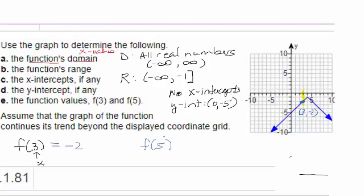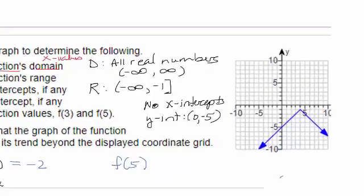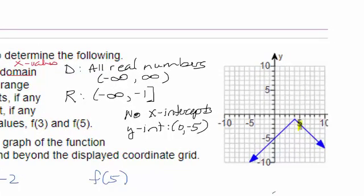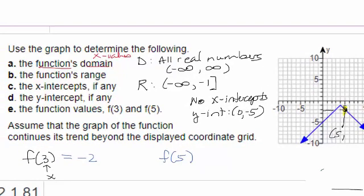And now let's find f of 5. That's another question in part E. I'm going to go over to 5. Go down here. We see that it does hit the graph. And it looks like 5 also has a, when x is 5, the y-coordinate appears to also be negative 2. I hope you found this video useful. If you did, please remember to like it.